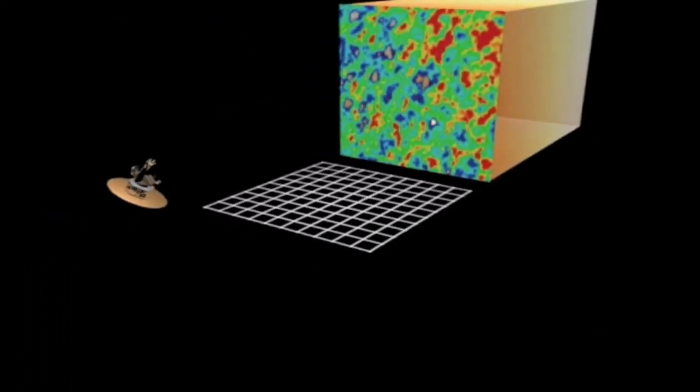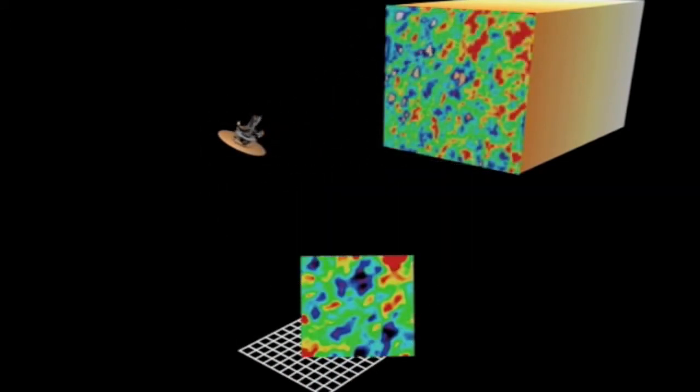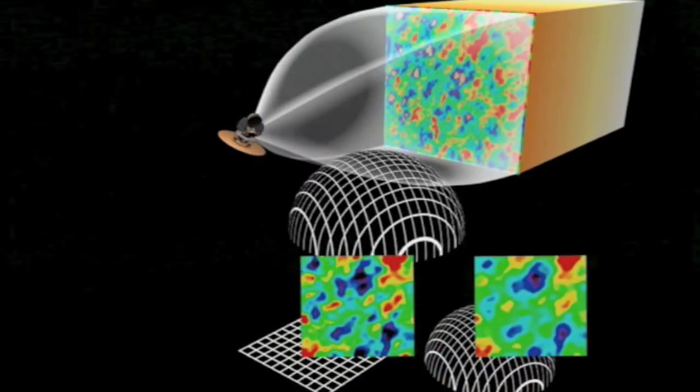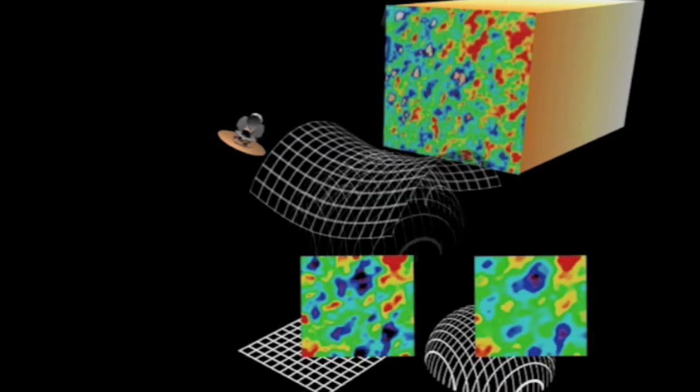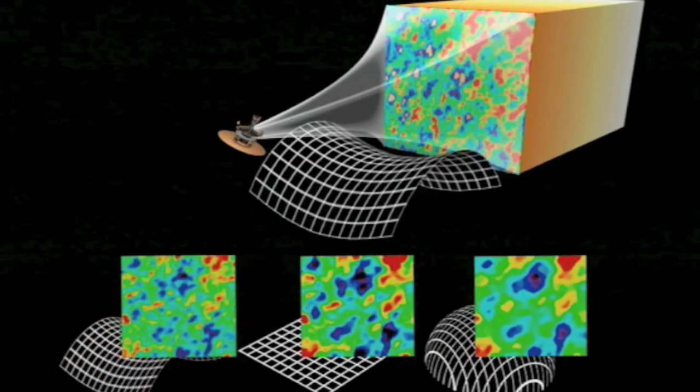If the universe is flat, our triangle would have straight lines, and all angles would equal 180 degrees and the average angular distance between the CMB fluctuations would be one degree. If the universe was positively curved, our lines would bend outward and our angles would be greater than 180 degrees, and the angular distance in the CMB would be about one and a half degrees across. A negatively curved universe would look like this, with an average angular distance of a half a degree.